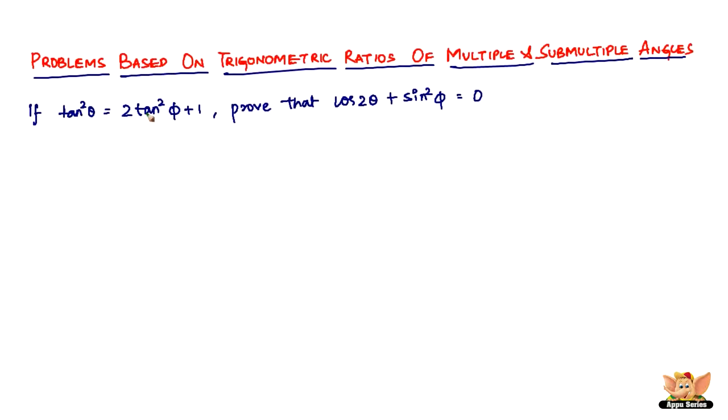It says if tan²θ = 2tan²φ + 1, φ is just another symbol, so don't worry about it. So if tan²θ = 2tan²φ + 1, prove that cos2θ + sin²φ = 0.